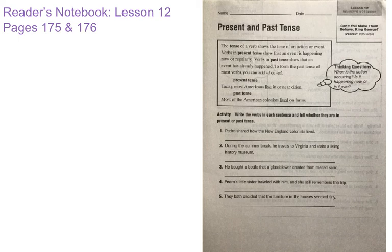Present tense: today most Americans live in or near cities. That's happening today, they live. Past tense would be most of the American colonists lived on farms. You can see that's the word live with a D at the end. Lived, and that's past tense.